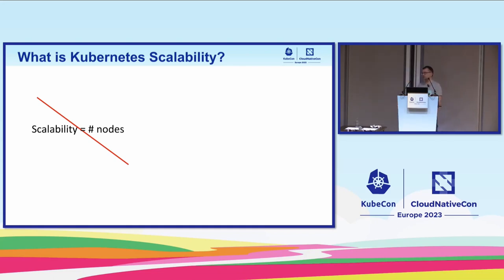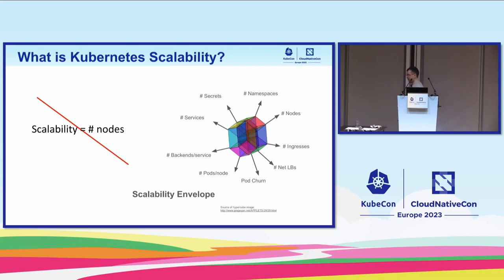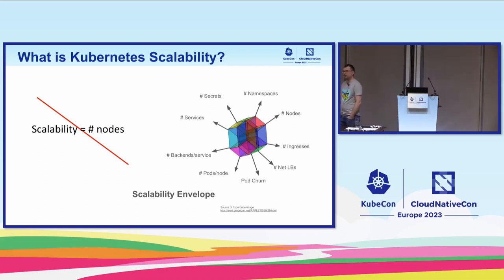Number of nodes or size of the cluster is actually only one of those many dimensions. Others include number of secrets, number of load balancers, number of persistent volumes, number of pods in the cluster, and so on — those all affect scalability and those are things our users are asking for. One dimension that is particularly interesting to mention is pod churn: with a lot of work happening in the community towards better support for batch workloads on top of Kubernetes, pod churn is one of the most frequently asked questions. Users are asking how many pods per second we can create in the cluster, and this is probably the most frequently requested improvement currently.